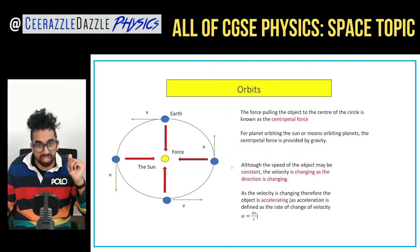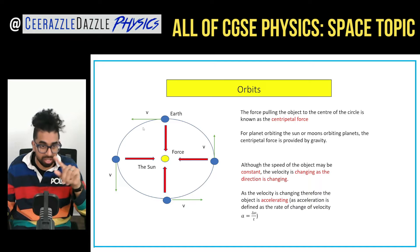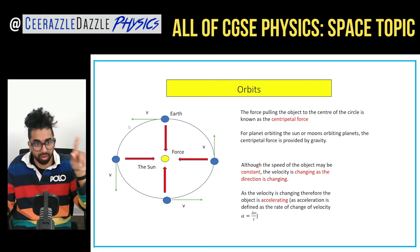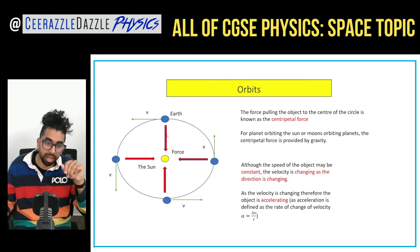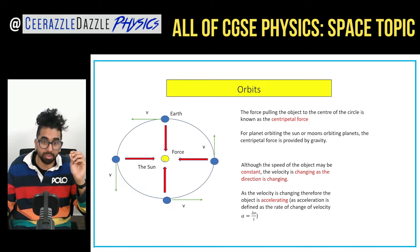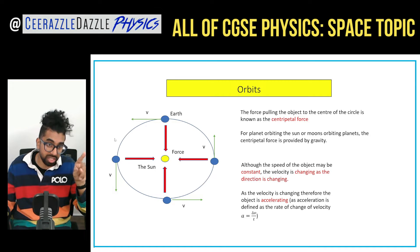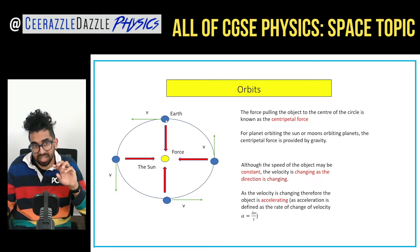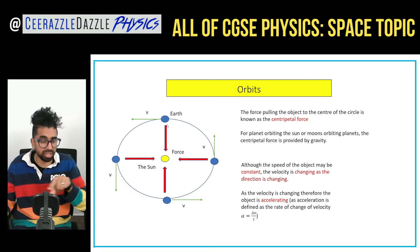When an object goes around another object in a circle, we know it is going to be experiencing circular motion. The force pulling you to the center of the circle is called the centripetal force. For the Earth going around the Sun, the centripetal force is going to be provided by gravity, pulling it inwards. As the object moves around, its velocity is changing because it's changing direction, and that's the reason why it moves in a circle.